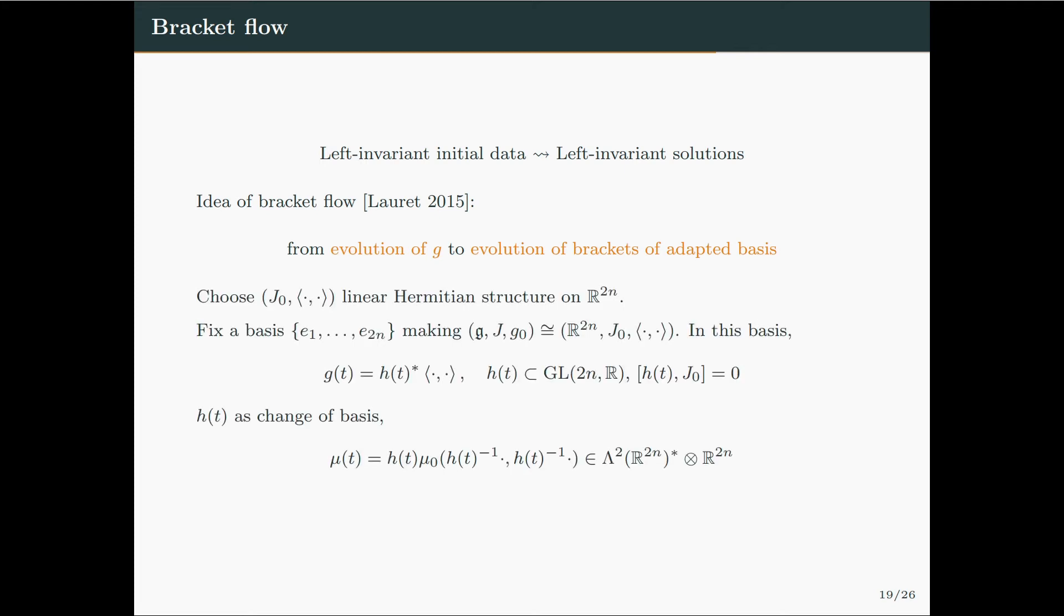To formalize this, choose a linear Hermitian structure on R^2n, and fix a basis of the Lie algebra G, which allows to identify the Lie algebra with the complex structure and the initial metric with this model. In this basis, the metric will evolve in this way, where H_t is a family of automorphisms of H_1 commuting with J_0. And we can regard H_t as a change of basis, so that when we apply this change of basis, the metric will remain untouched, but the bracket will change in this way.